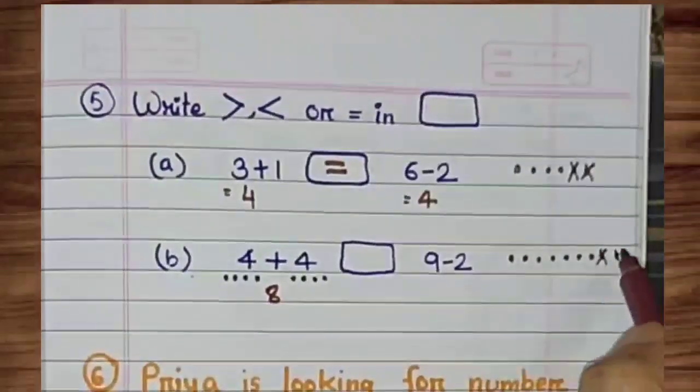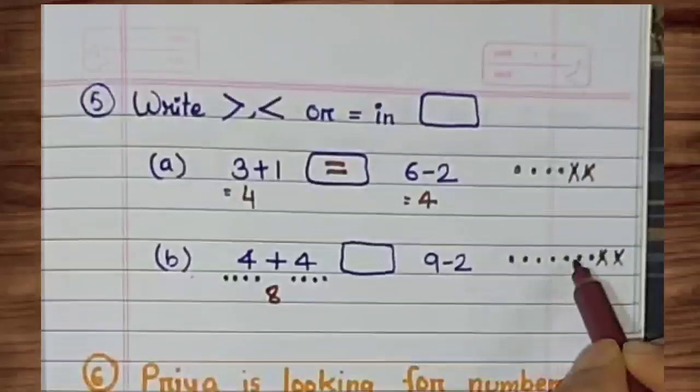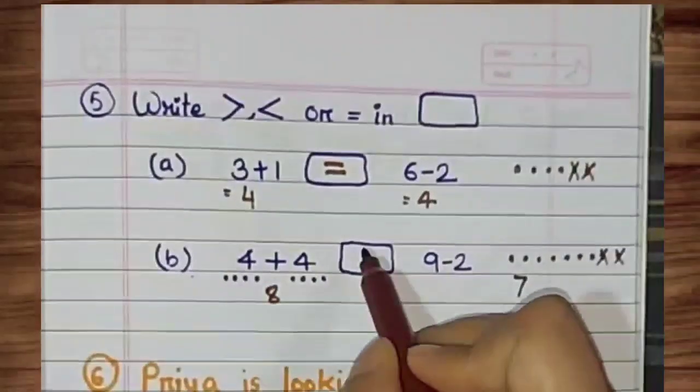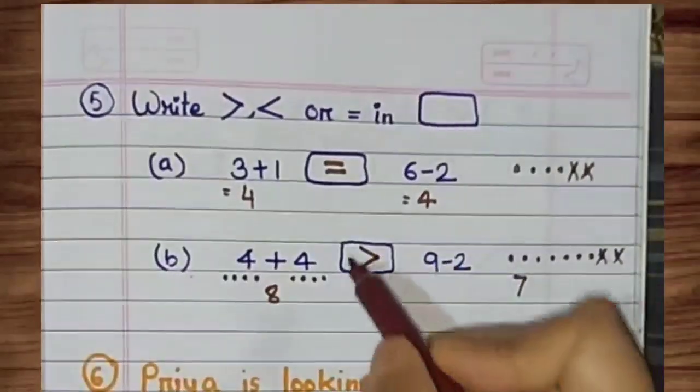Then cross 2 dots. Then count. It is 7. Then 8 is greater. Then write down the greater sign.